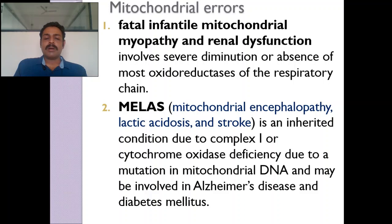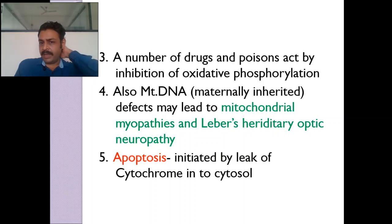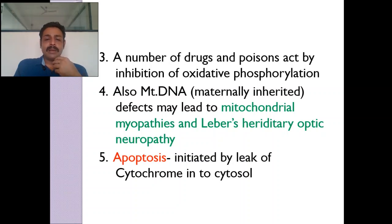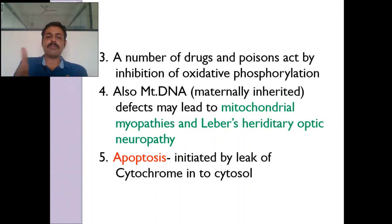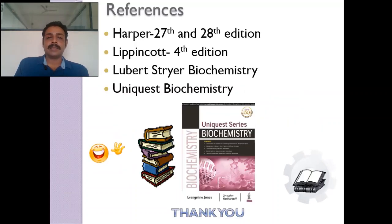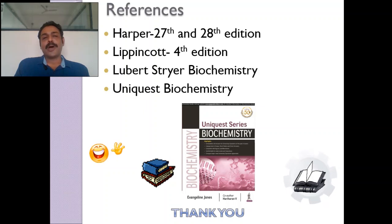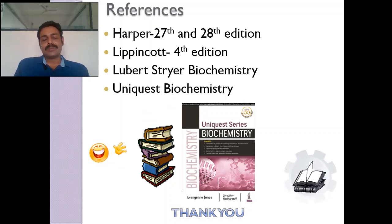If there is a problem with mitochondrial DNA, what happens? Fatal infantile mitochondrial myopathy and renal dysfunction is one problem. MELAS — mitochondrial encephalopathy, lactic acidosis, and stroke — is another. Complex I or Complex III deficiency is thought to be involved in Alzheimer's and diabetes. Many drugs and poisons inhibit mitochondria. Leber's hereditary optic neuropathy and mitochondrial myopathy are mitochondrial diseases. Mitochondria also plays an important role in apoptosis — programmed cell death. The first step of apoptosis is mitochondrial membrane damage: cytochrome c leaks into the cytosol.